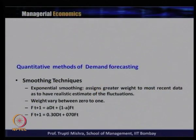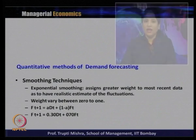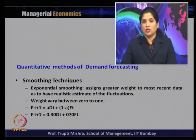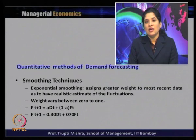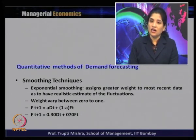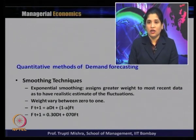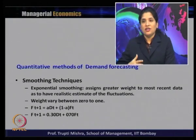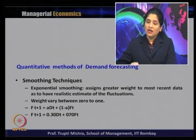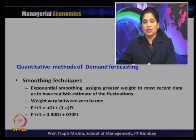The third method is exponential smoothing. In exponential smoothing, generally it assigns a greater weight to the most recent data to have a realistic estimate of the fluctuation. If it is a time series of 10 years, more importance is given to the past year and past 2 years, rather than giving similar weight to all years across the 10-year period. More weight is given to the year just before the present period.